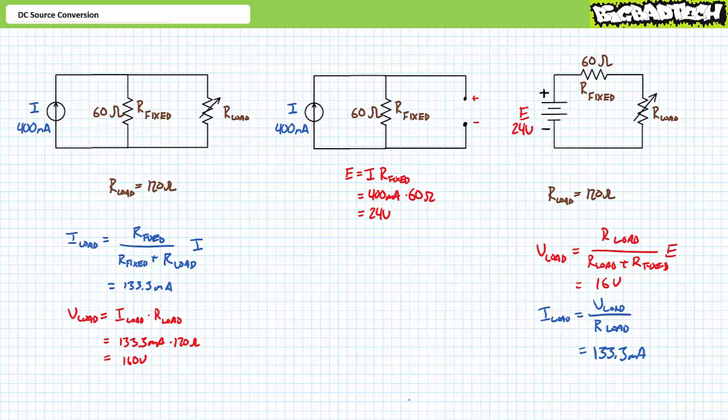Note that when performing source conversion, it's important to maintain original polarity. Notice that the voltage source positive terminal is pointing up, as is the current source's directional arrow. By respecting polarity and direction, this ensures the variable load resistance experiences the same direction of current flow for both configurations.